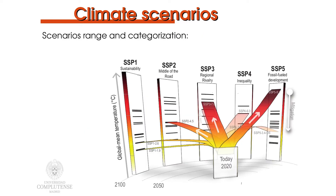These five scenarios depict vastly different energy futures, with a wide range of energy demand and supply structures and of land use. Inside each of the five scenarios, there are multiple potential pathways with different energy demand and supply structures and land use evolution. The range of possible pathways is further extended by the potential addition of mitigation policies to each of the five scenarios.